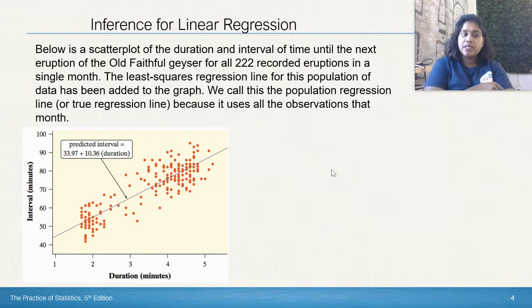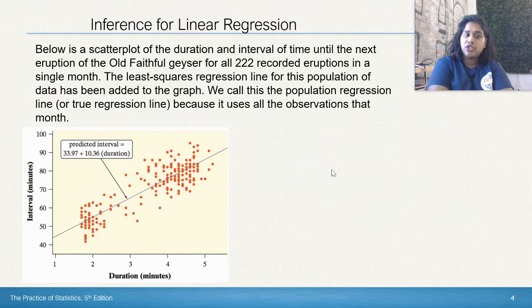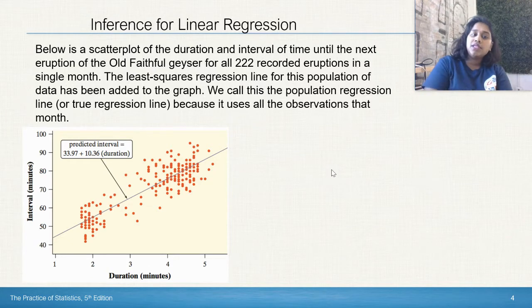They've written it in the true least squares regression format. The predicted interval, which is your y hat, is going to be equal to 33.97, your a, plus bx, so 10.36, and your x value is your duration in minutes. We call this the population regression line, or the true regression line, because it uses all of the observations in that month of recording.